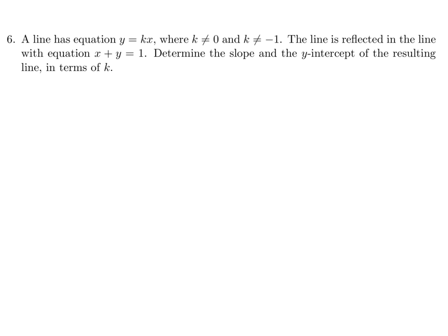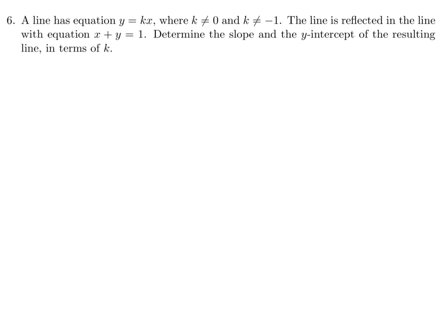A line has equation y equals kx, where k is not 0 and k is not equal to negative 1. The line is reflected in the line with equation x plus y equals 1. Determine the slope and y-intercept of the resulting line in terms of k. Let's draw a diagram. The reflection line x plus y equals 1 can be written as y equals minus x plus 1.